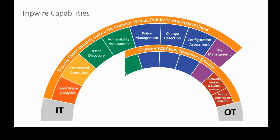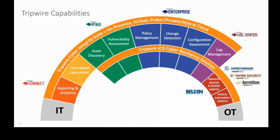Most people know Tripwire for file integrity monitoring — that was our first product, and we're still the best at detecting integrity changes. Now that Tripwire is part of the Belden family of companies, we can help you with so much more. If you're looking for risk reduction in your OT or IT environment, call Tripwire first.